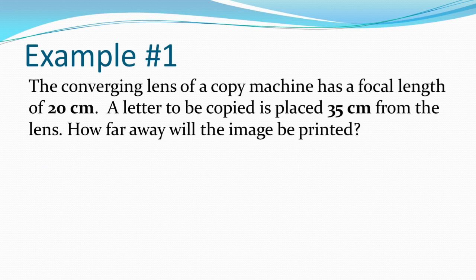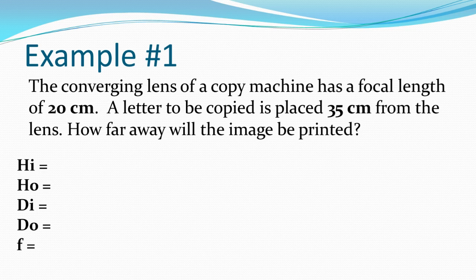Let's explore this first example. A converging lens of a copy machine has a focal length of 20 centimeters. A letter to be copied is placed 35 centimeters from the lens. How far away will the image be printed? The most important thing is to organize your work. List out your variables: hi, ho, di, do, and the focal point. The focal length is 20 centimeters, the distance of the object is 35 centimeters, and we're solving for the distance of the image.